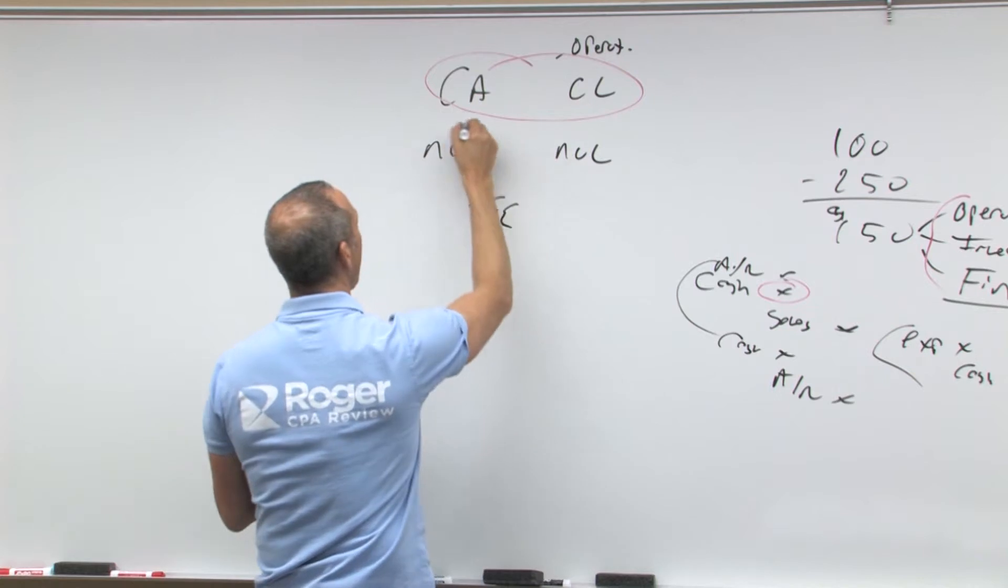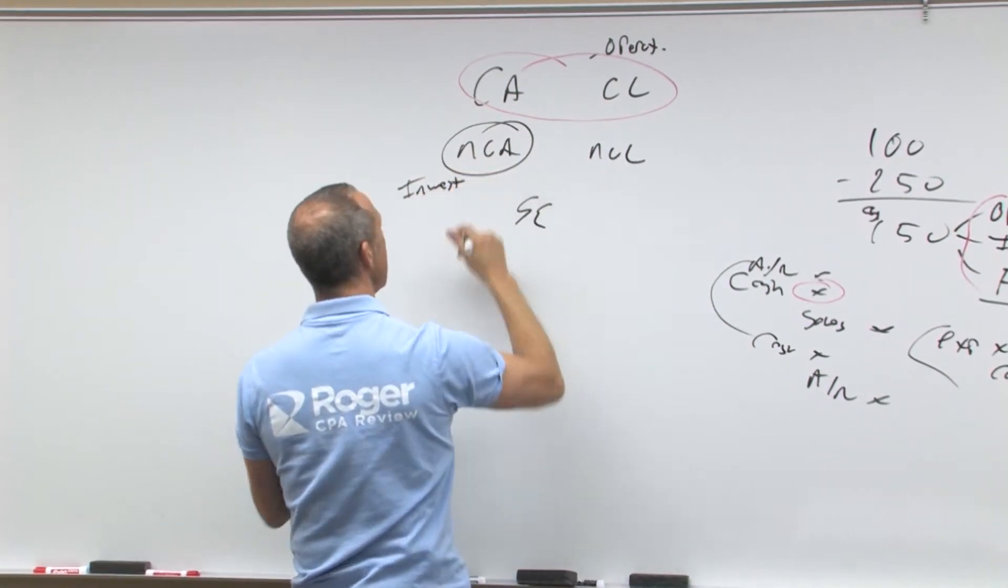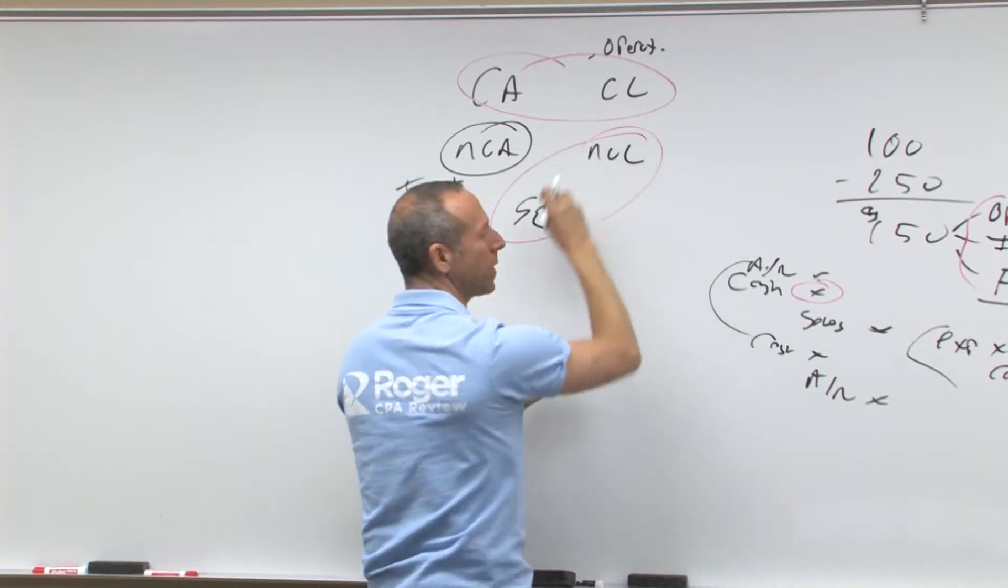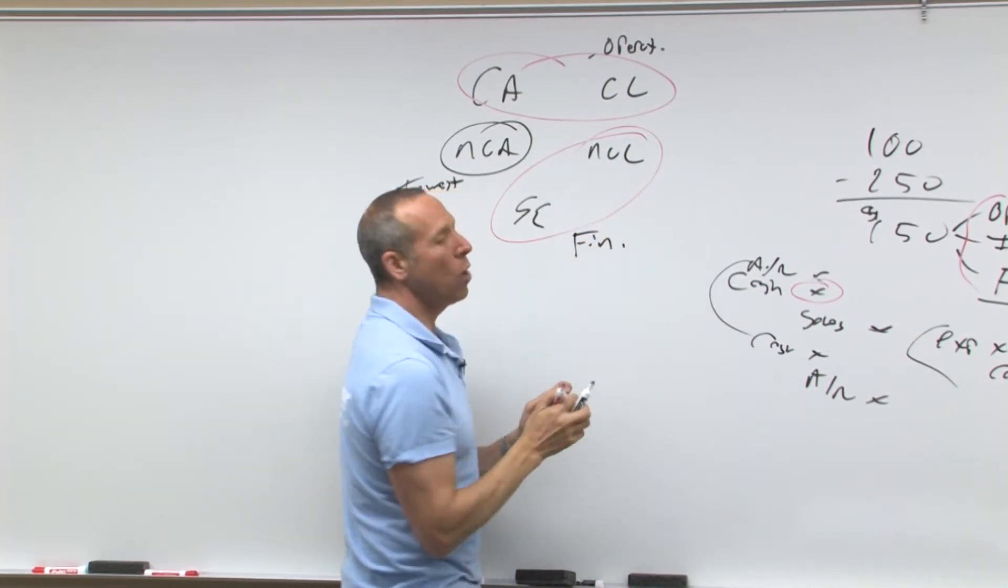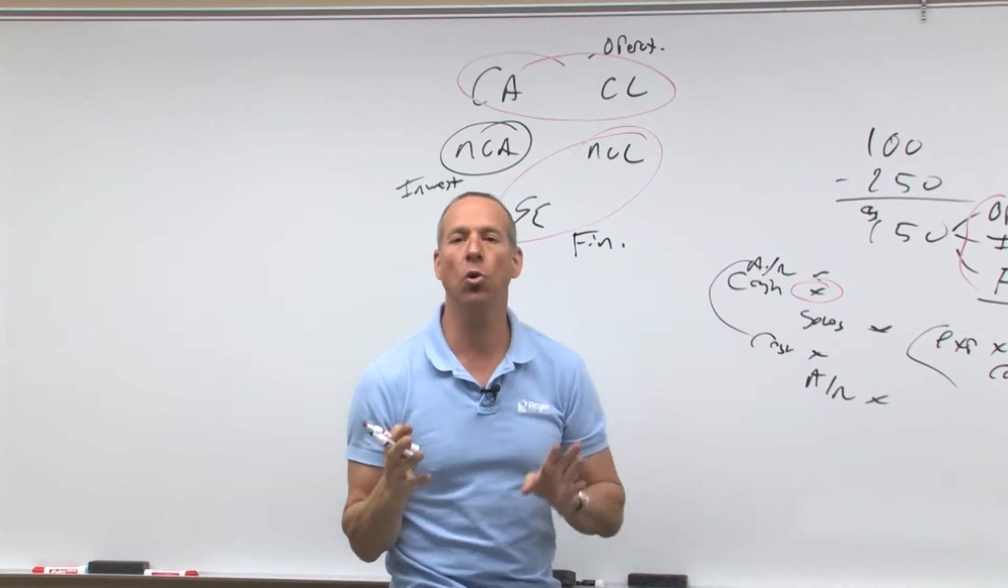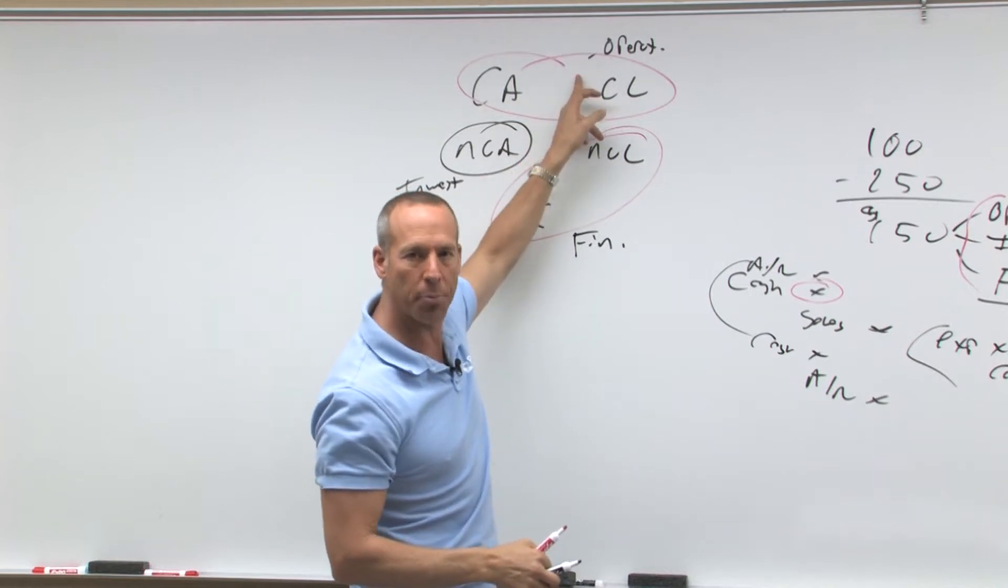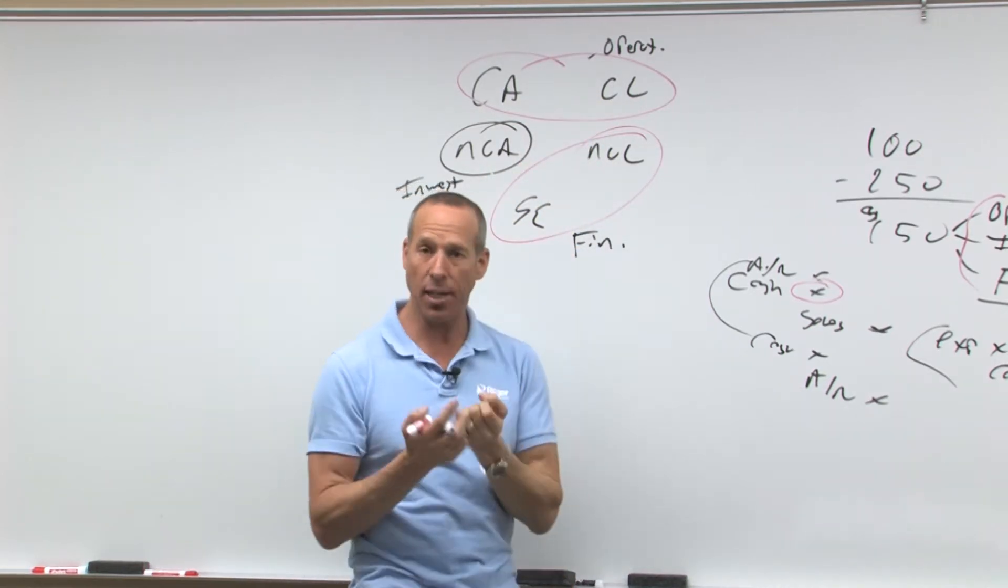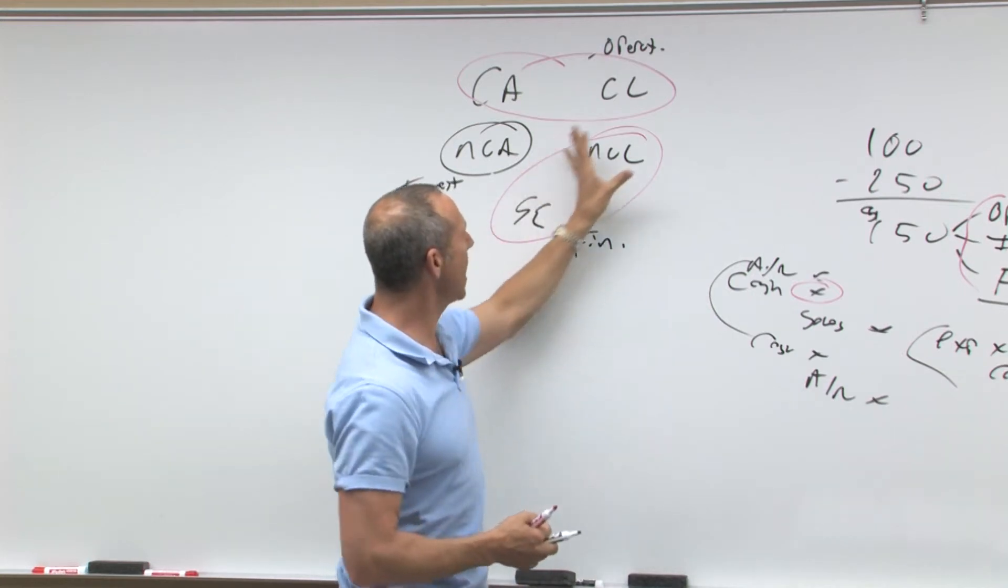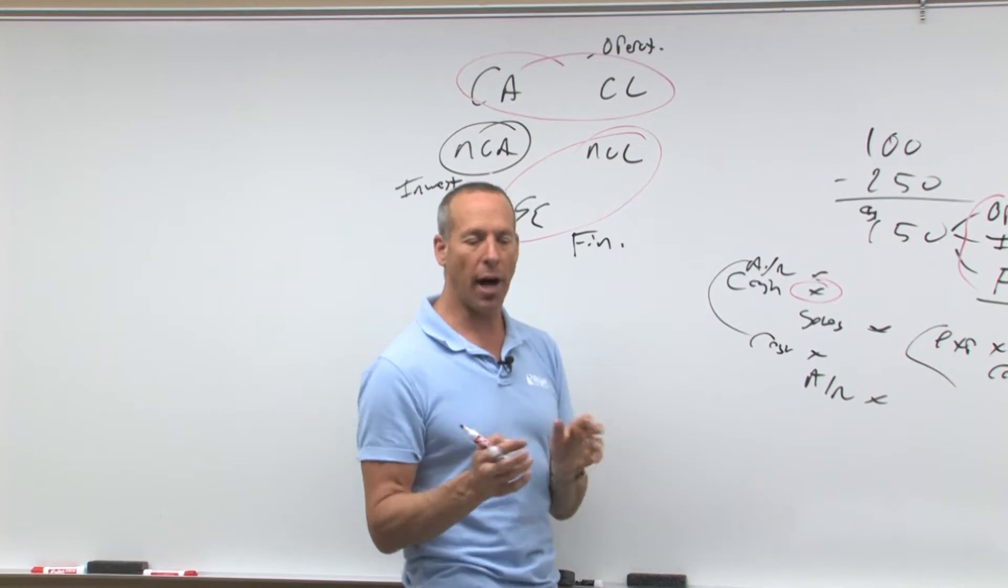If it is a non-current asset, that would be investing. If it is a non-current liability or stockholder's equity, that would be financing. Again, it doesn't work for everything, but it's a good cheat sheet way to look at it. If it's a current asset or current liability, that's operating. If it's a non-current asset, that would be investing because we're making an investment. If it is a non-current liability or stockholder's equity, that's generally financing.